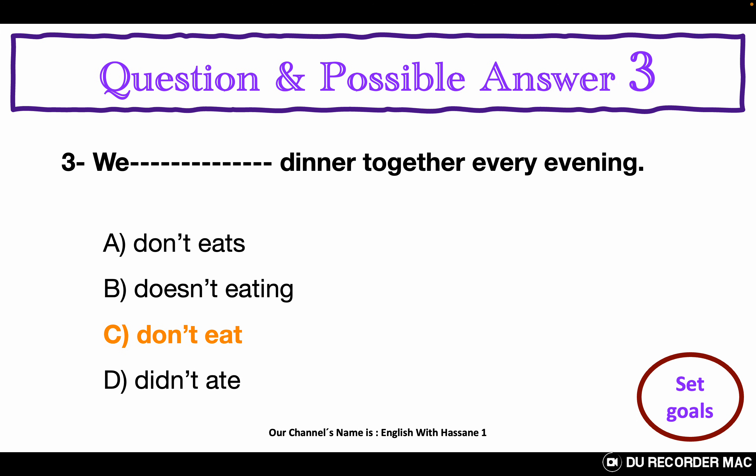Question and possible answer 3. All the questions of this grammar test are in the present simple negative. Choose the best answer A, B, C, or D. We ___ dinner together every evening. A. Don't eats. B. Doesn't eating. C. Don't eat. D. Didn't ate. The correct answer for this question is the letter C. Don't eat.